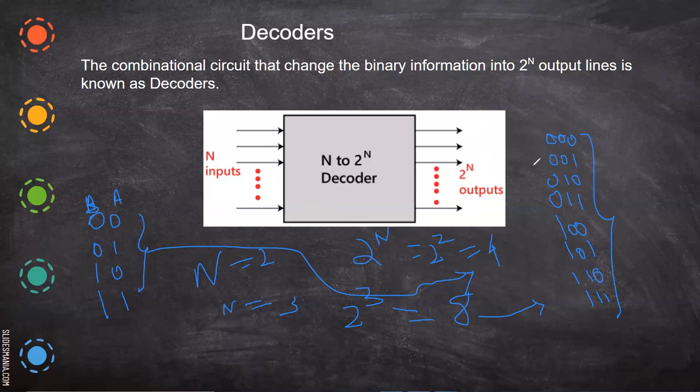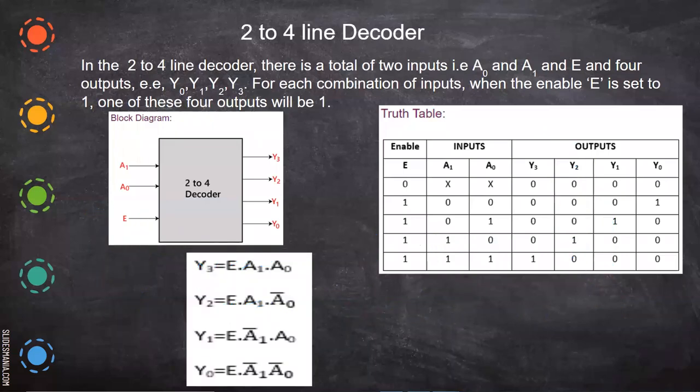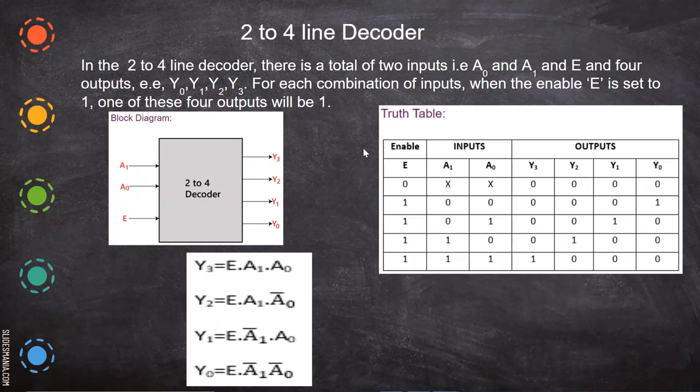Now we will see some more decoders. See here, two to four line decoders. This will be mostly used when we have many number of connections to be given. When we want to give more number of circuits, then we can use decoders. So here, in a two to four line decoder, this is the two lines. There is a total of two inputs, A0 and A1 and E is enabled.